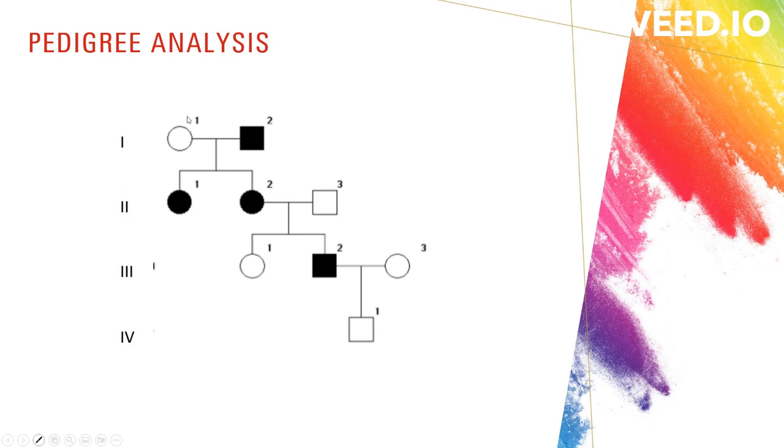For instance, if you look at this female at the upper left, we can name it as 1-1. The dark circle or dark square represents an individual affected by the trait.